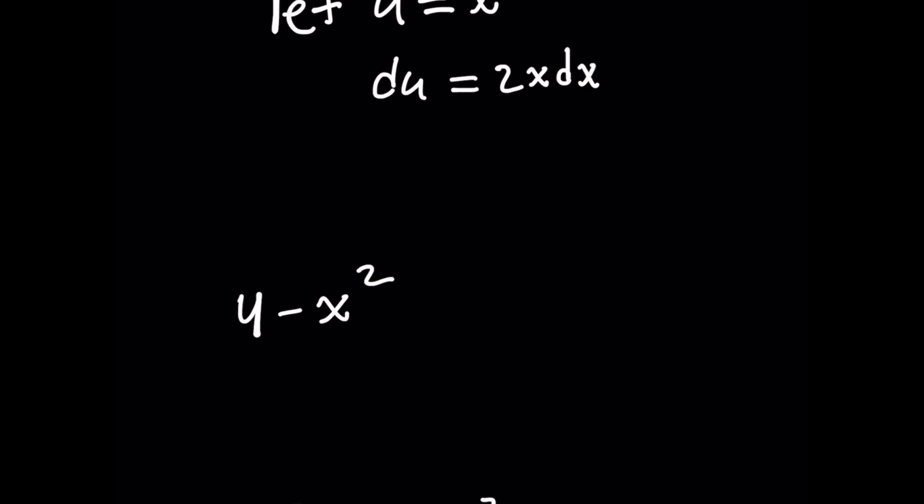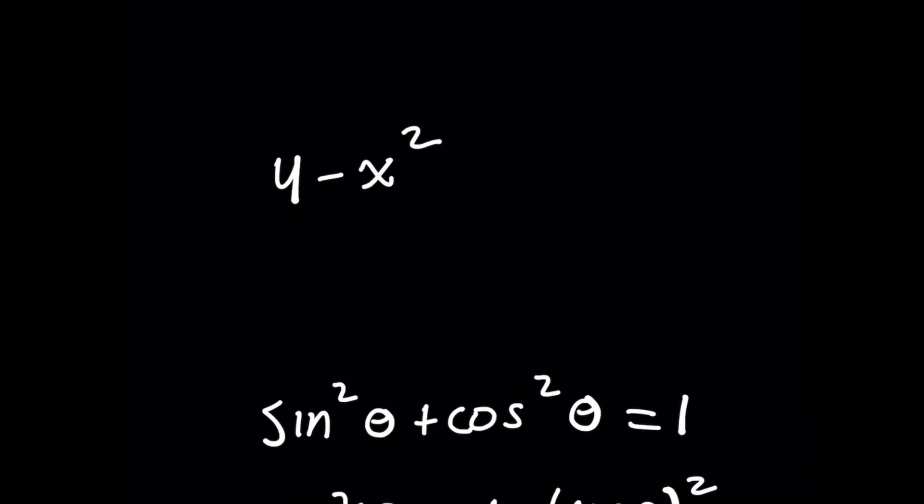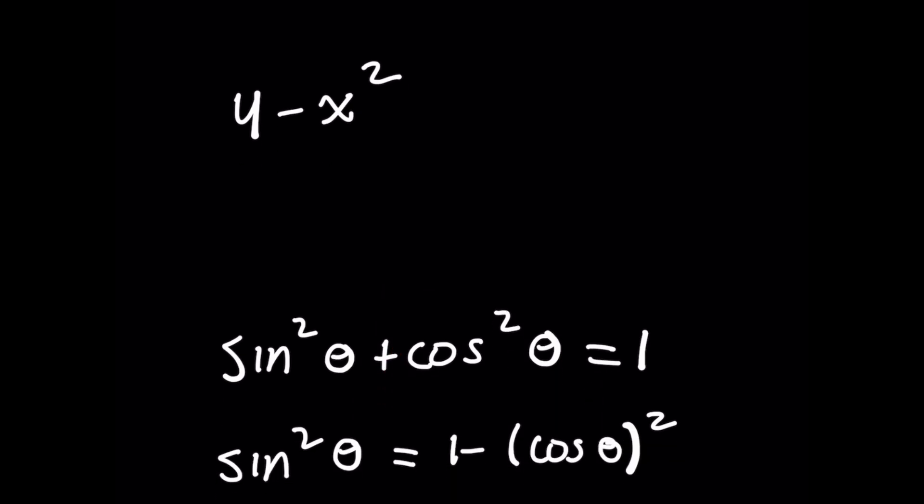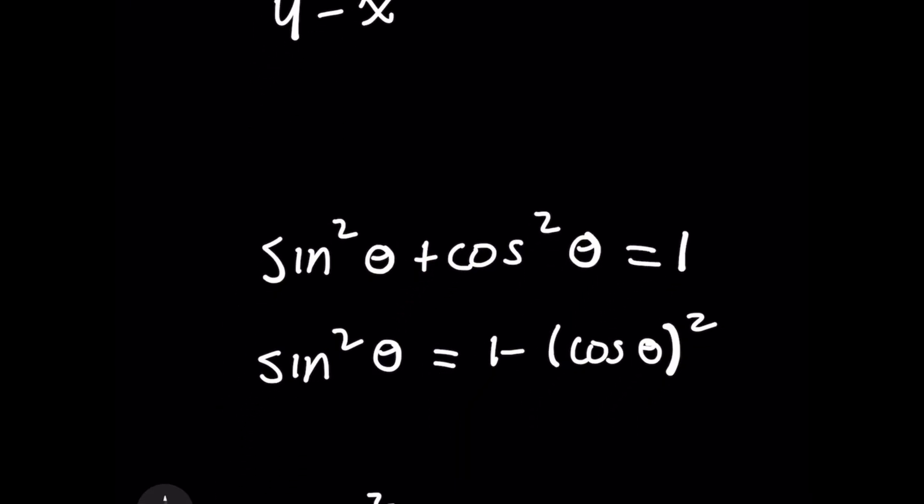I think about this very famous trig identity: sin²θ + cos²θ = 1. You might be wondering why this even matters. Well, you need to subtract cos²θ on both sides of the equation because check this out: now you have a new identity written as sin²θ = 1 - (cos θ)².